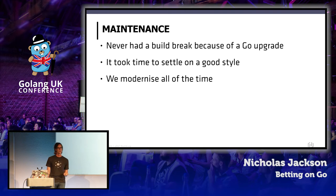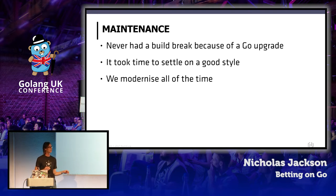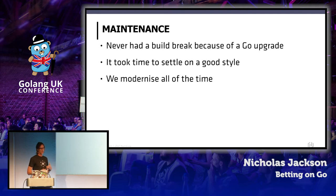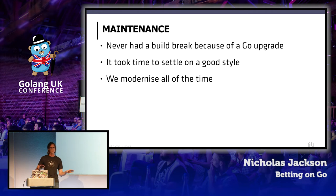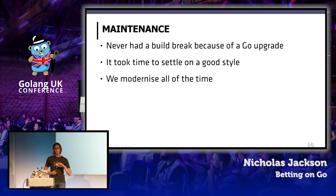It did take us some time to settle on a good style. Back in 2012–2013 we didn't have the wonderful community that exists today who can advise us on patterns and idioms. A lot of reference we had to take at those times was drawn out of things like the standard library. But we modernize all the time. Some of that code still exists, and every time we see something maybe out of trend, we can modernize it. The ability to use things like the fantastic test suite and the code being very easy to understand makes it easy to keep updating those areas.